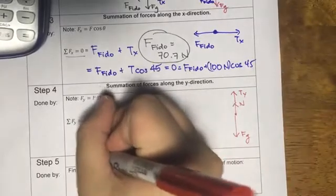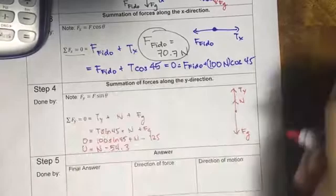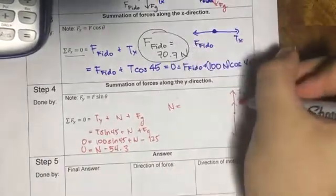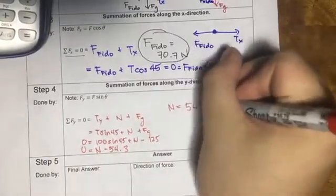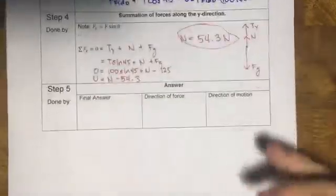But that's going to be n minus 54.3 is equal to zero. Therefore, n or normal force is equal to 54.3.